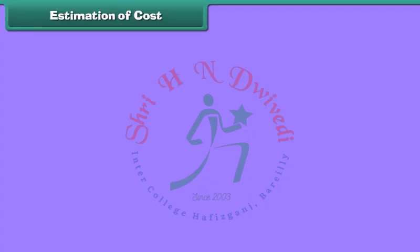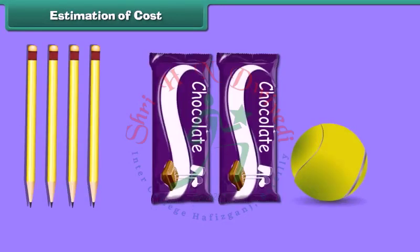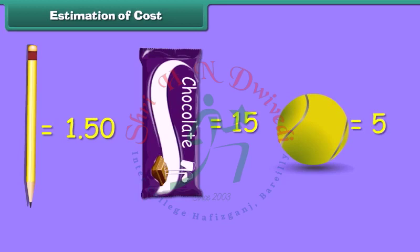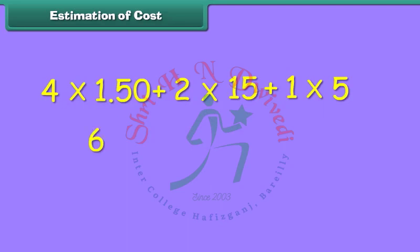Estimation of cost means calculating the total cost of different items. What will be the total cost of four pencils, two chocolates, and one tennis ball? The unit cost of a pencil is 1 rupee 50 paisa, unit cost of chocolate is rupees 15, and tennis ball is rupees 5. We calculate total cost: 4 × 1.50 + 2 × 15 + 1 × 5, which equals 6 + 30 + 5 rupees, amounting to rupees 41. Thus, this is the estimated cost.